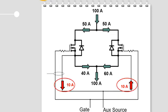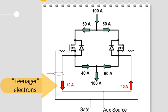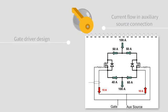We affectionately term these as teenager electrons as they seem to prefer to take a different path from everyone else. This current must be limited as it can cause gate oscillations and device failure.